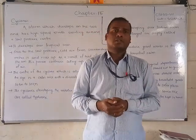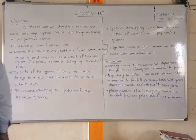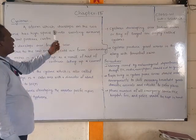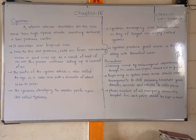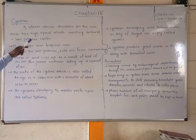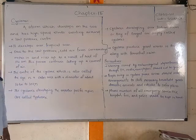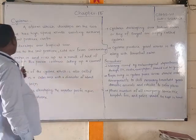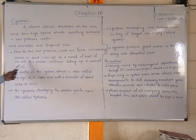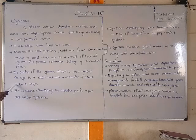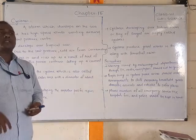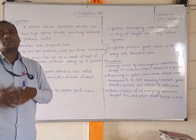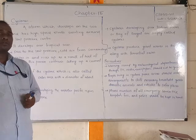A cyclone is a storm which develops on the sea with high-speed winds swirling around a low-pressure center. It develops over tropical seas and slowly moves toward the coast and onto land. The center of the cyclone, also called the eye, is a calm area with a diameter of about 10 to 30 kilometers, where the low pressure is created.